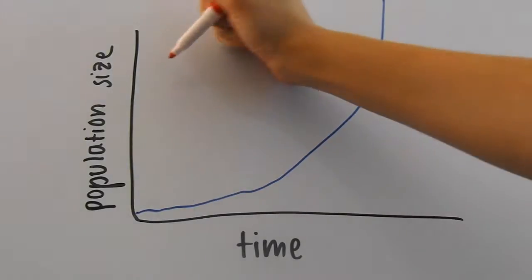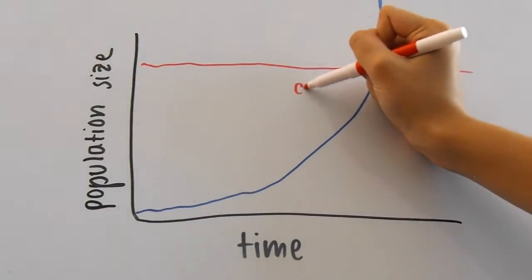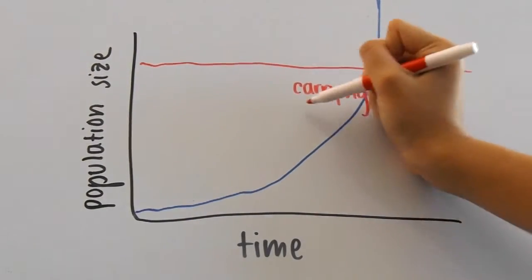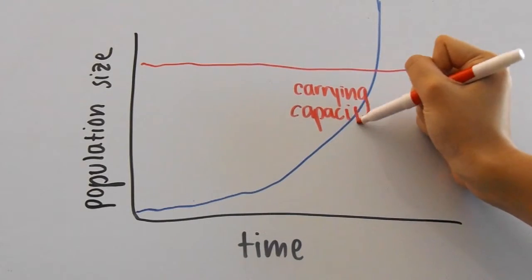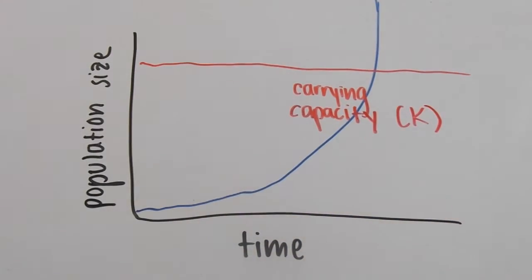On the graph, I'll draw a line here that represents the carrying capacity. Some places also symbolize the carrying capacity with the letter K, so I'll write that in parentheses here.